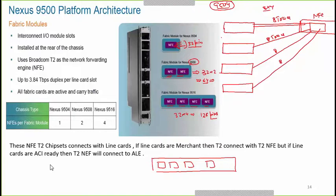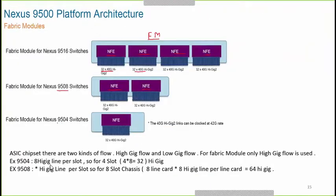Always remember: each fabric module has a maximum of four NFEs. If you are using a 9504, out of four NFEs you will use only one. In a 9508 you will use two NFEs, giving you 32 times 4 equals 128 pins to connect to your line cards. In a 9516 you will use all four NFEs.